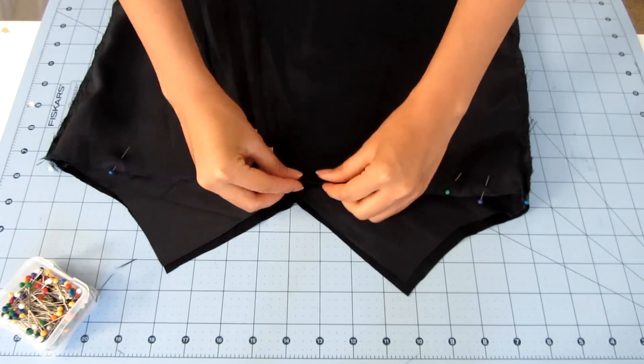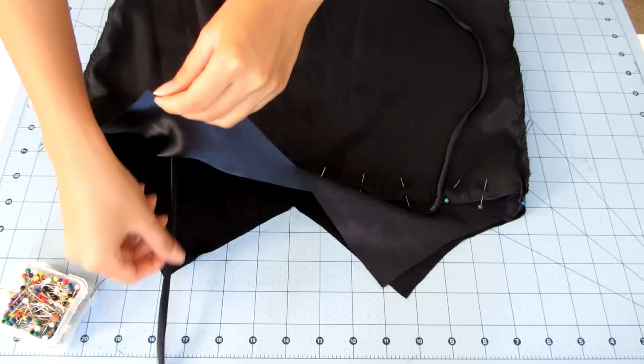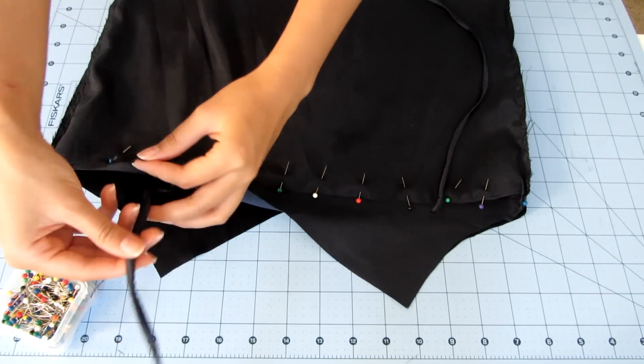Now, this is the tricky part. To attach the straps, place one end in between the front cami piece and its facing at the point of the neckline.